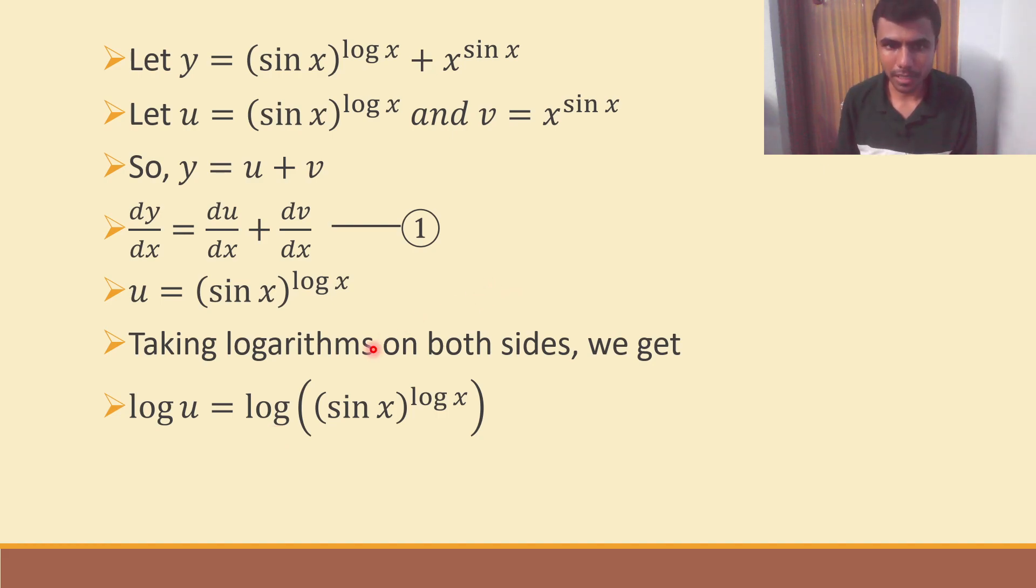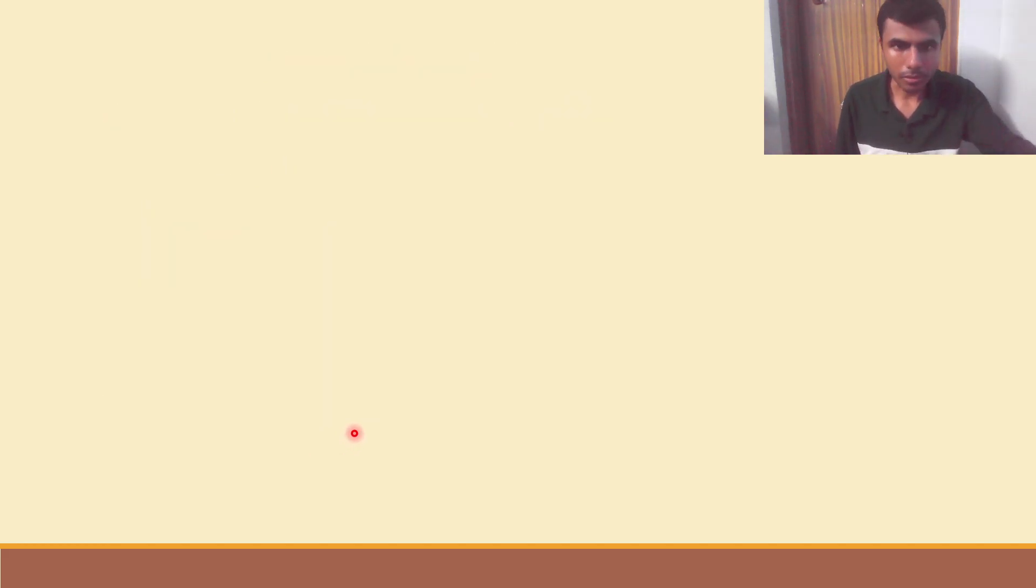Now, what would happen by this? In logarithms, there is a property by which we can say that log of a power m is nothing but m log a. So, basically, within this bracket, we have sine x power log x. So, this log x will come here in the beginning. So, I am left with log of sine x. So, log u is nothing but log x into log of sine x.